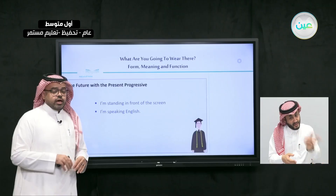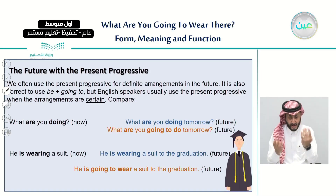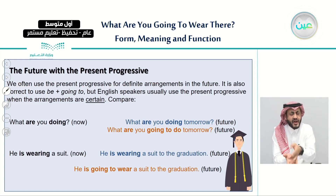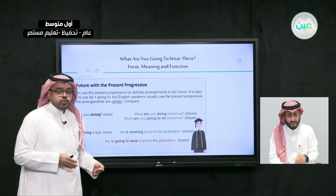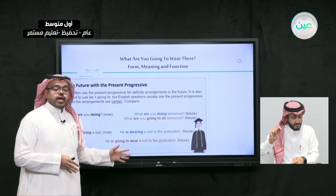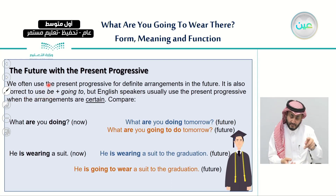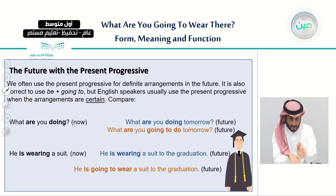We often use the present progressive for definite arrangements in the future. So if we have a certain plan that will happen in the future, we can use the present progressive. It is also correct to use 'be going to,' but usually English speakers use the present progressive when the arrangements are certain.